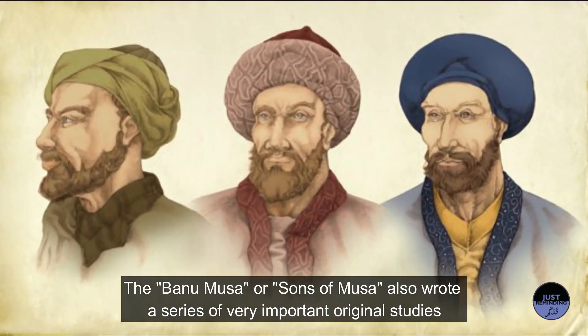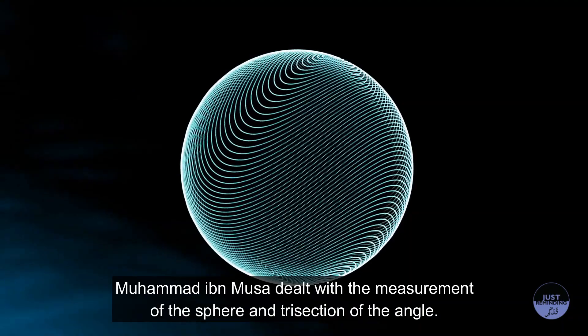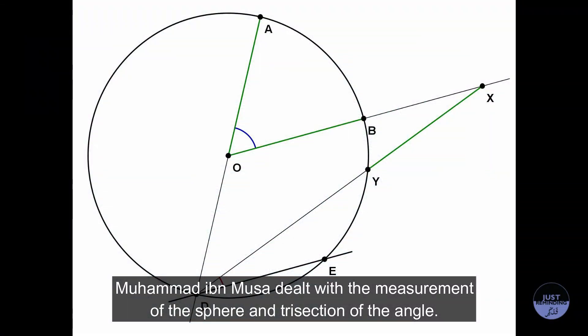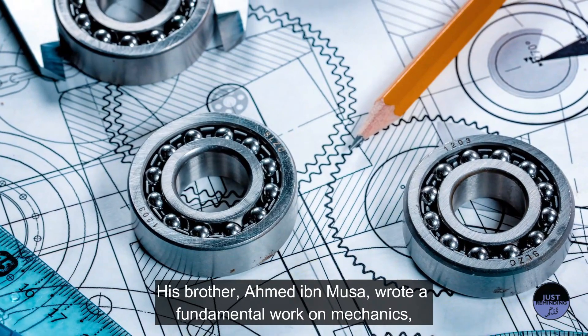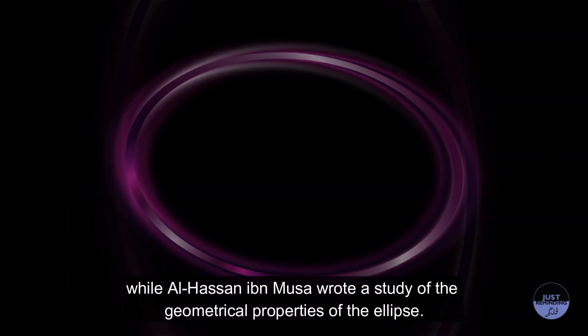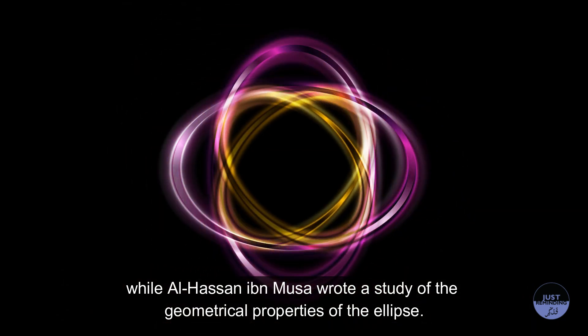The Banu Musa, or Sons of Musa, also wrote a series of very important original studies, especially in geometry. Muhammad Ibn Musa dealt with the measurement of the sphere and trisection of the angle. His brother, Ahmed Ibn Musa, wrote a fundamental work on mechanics, while Al-Hassan Ibn Musa wrote a study of the geometrical properties of the ellipse.